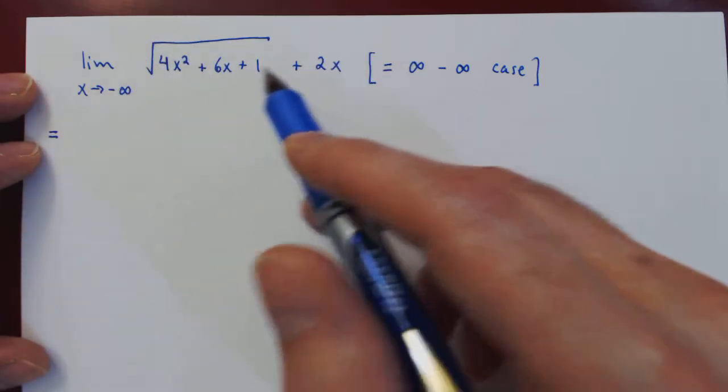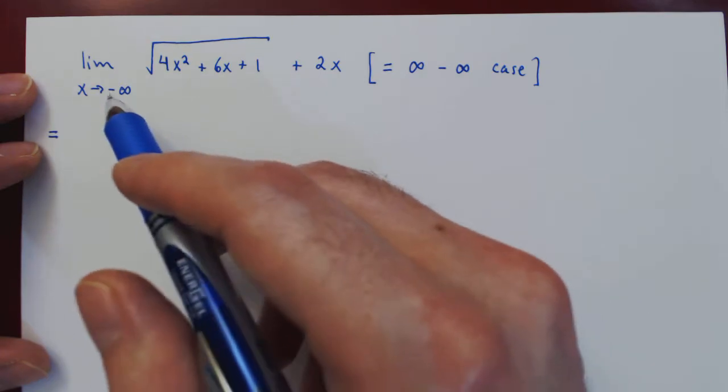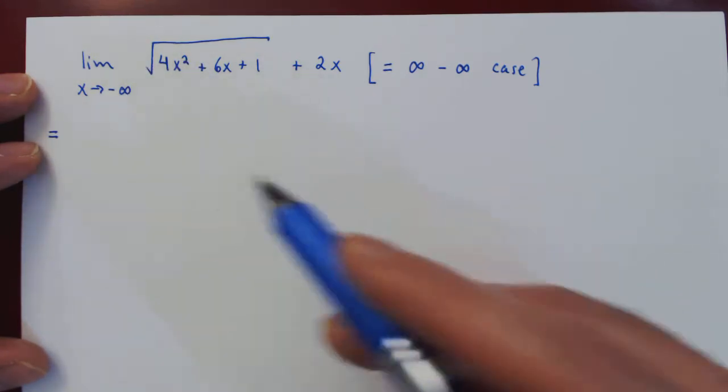So we will try to factor x from this expression. Of course, since x is negative, we'll have to be careful here with the root of x squared.